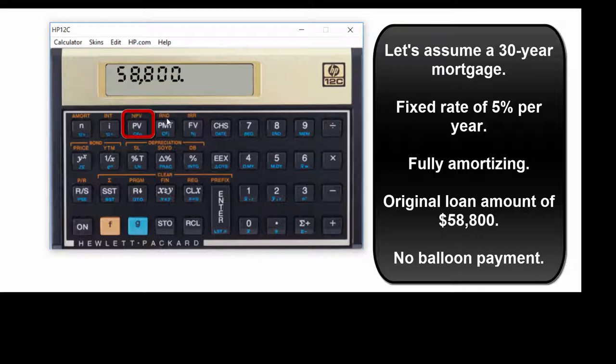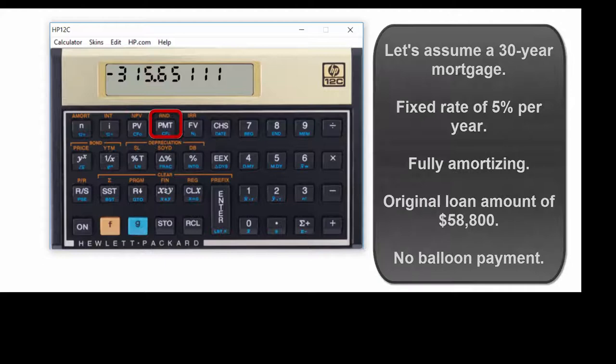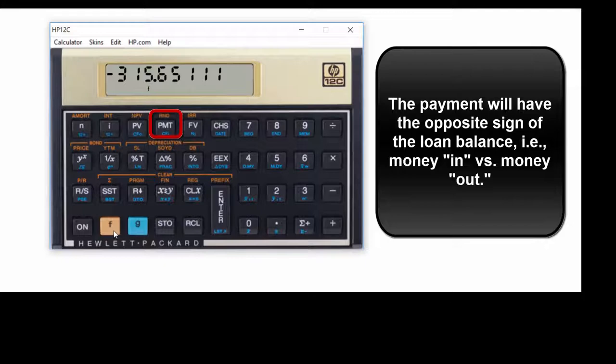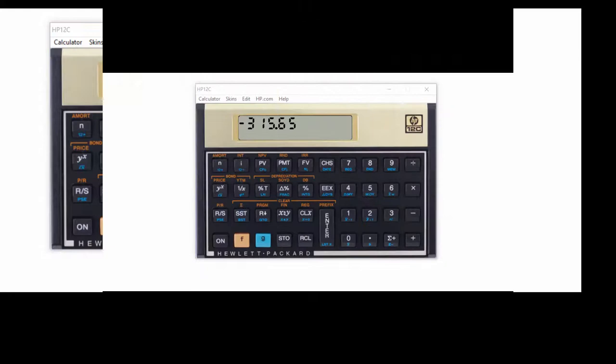We said the original principal balance is $58,800. Plug that in as the PV. Let's plug in zero for the future value to tell it there's not a balloon payment in this instance. Then we'll solve for the payment, and it's $315.65. If you don't like that many decimals, hit F2, and you're down to two decimal places.